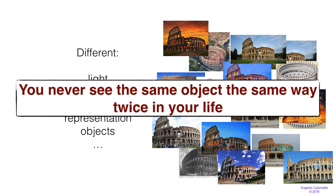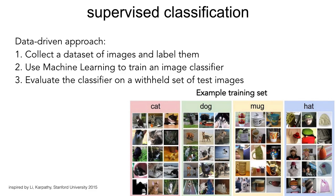Let's start with supervised classification of images. In this course we use a data-driven approach, meaning we use data to train a model that will be able to tell us what's in an image. We don't write a program that says 'if this pixel is red and that pixel is blue then...' because there are too many options. We cannot write such a program; instead, we have to write a statistical program — a machine learning solution.